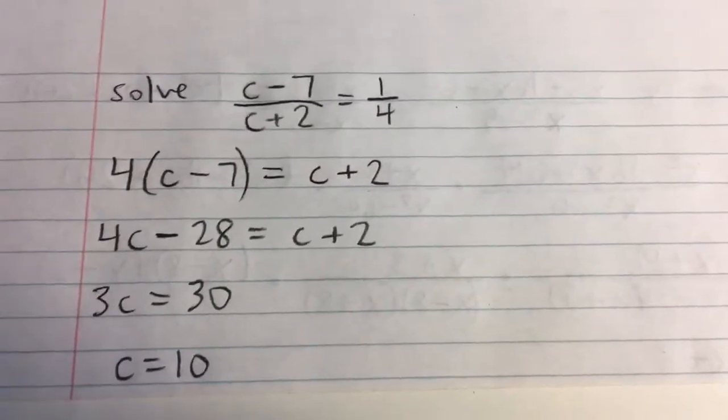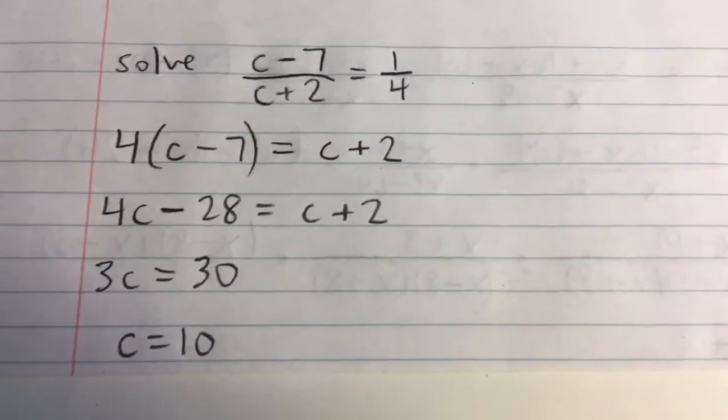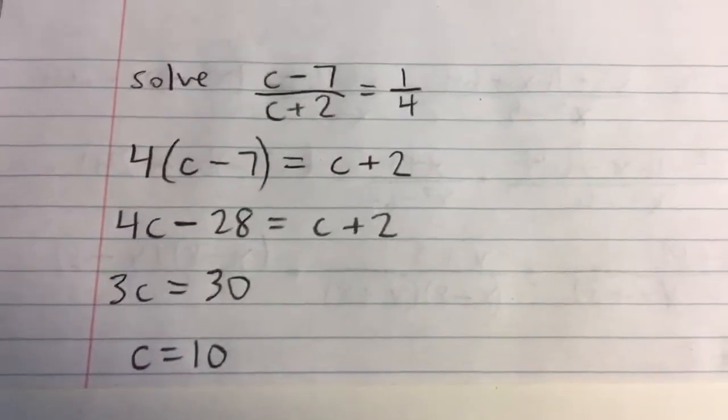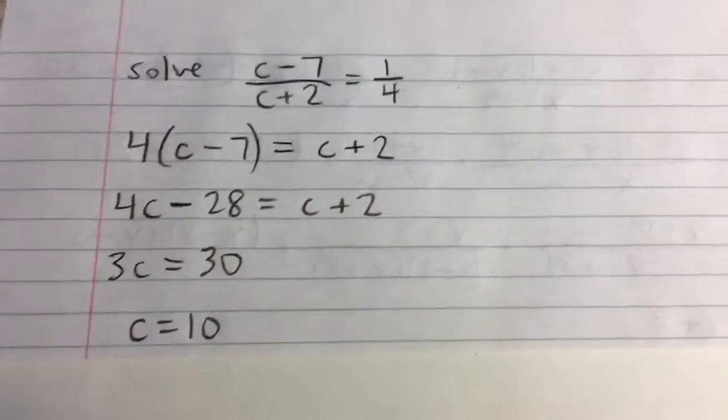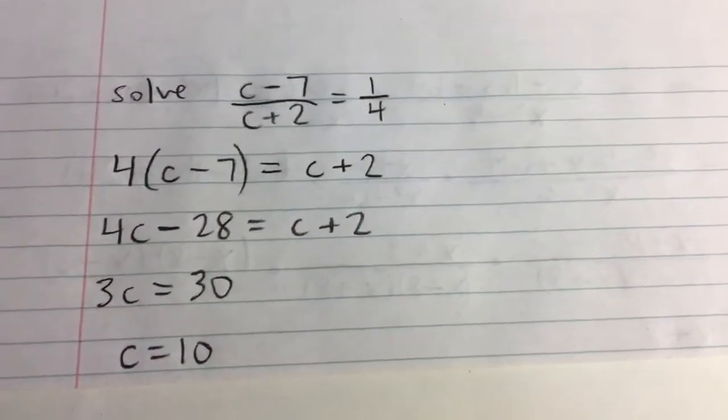Solve c minus 7 divided by c plus 2 equals 1 over 4. When we have a fraction equal to another fraction, we're going to cross multiply.